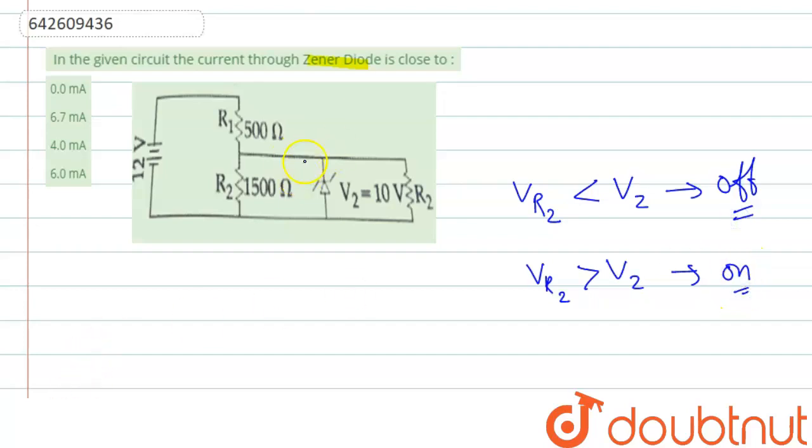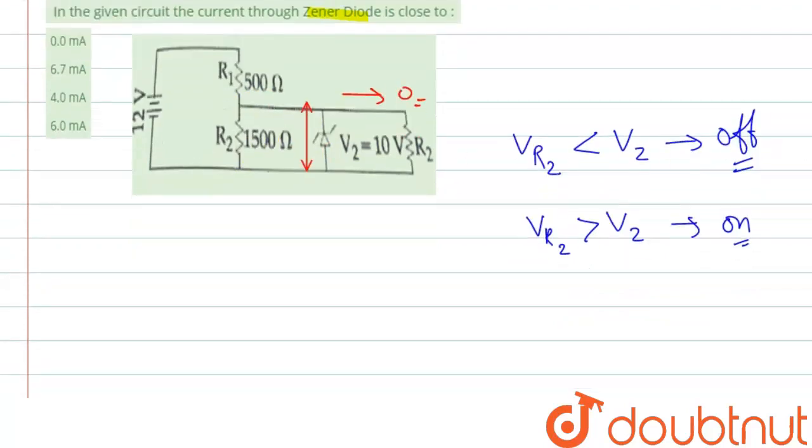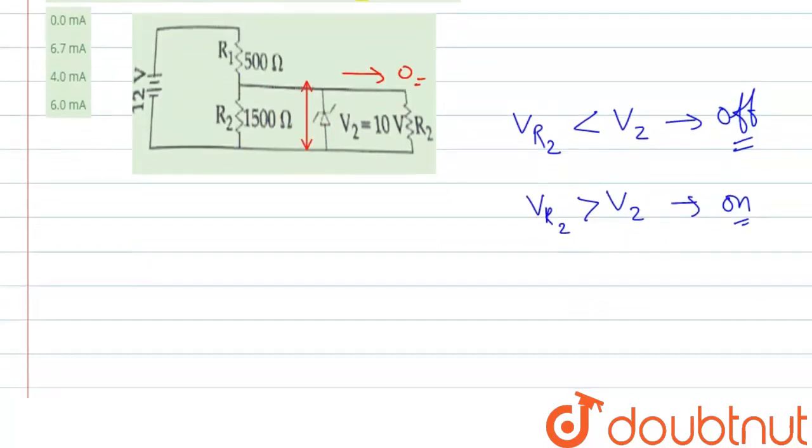So to find out, we first short circuit between these two points so that the potential drop here will be zero. Then we can find out the potential drop across R2.